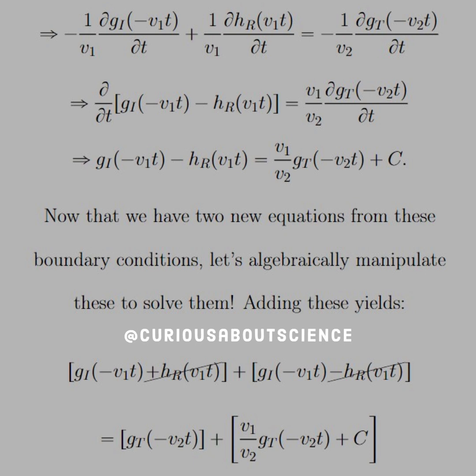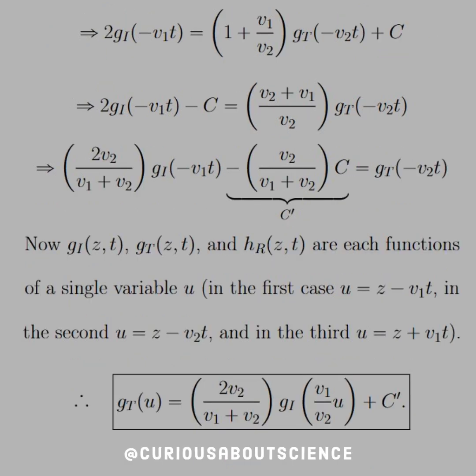So now that we have two equations for these boundary conditions, let's algebraically manipulate these to solve them. Adding these together will yield a cancellation of the h_R terms. We get 2 g_I is equal to 1 plus v_1 over v_2 times g_T plus that constant. So let's solve it all through and separate this for g_T. And once we find a common denominator, multiply that over, and we see that we get a new constant C prime.